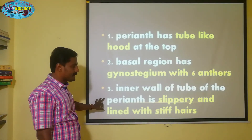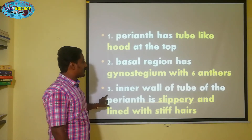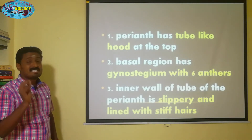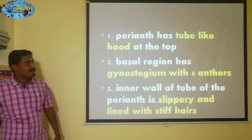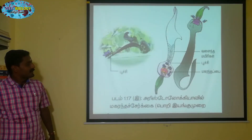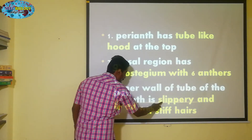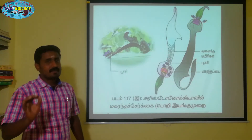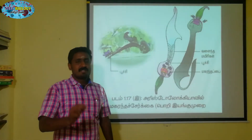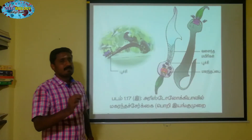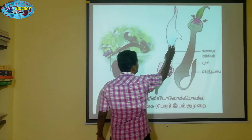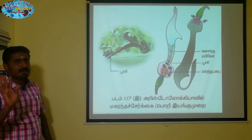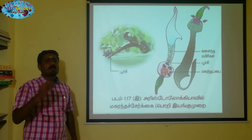The third point: the inner wall of the tube of the Perianth is slippery and lined with stiff hairs. The inner wall of the Perianth has stiff hairs and is slippery in nature, directed downwards.